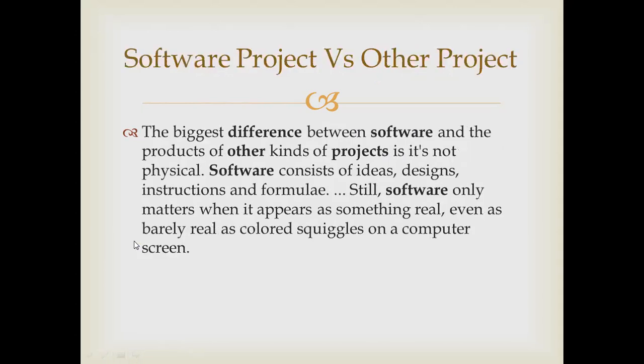Next is software project versus another project. The biggest difference is that software is not physical — software consists of ideas, design, instructions, and formulas. Software only matters when it appears as something real, even if barely real, as colored sequences on a computer screen. Software projects are also considered technically done when properly managed, but in other projects, they can be handled in a sequential manner.